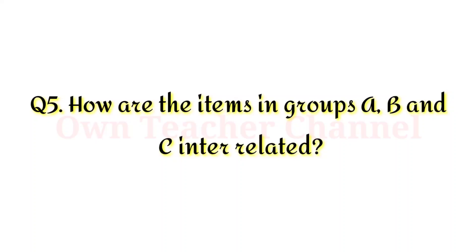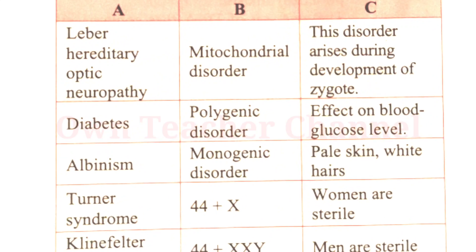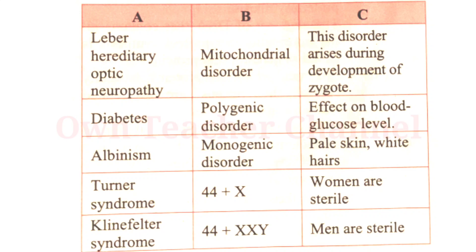Question 5: How are the items in groups A, B, and C interrelated? One: Leber's hereditary optic neuropathy — mitochondrial disorder — this disorder arises during development of the zygote. Two: Diabetes — polygenic disorder — affects blood glucose level. Three: Albinism — monogenic disorder — pale skin, white hair.